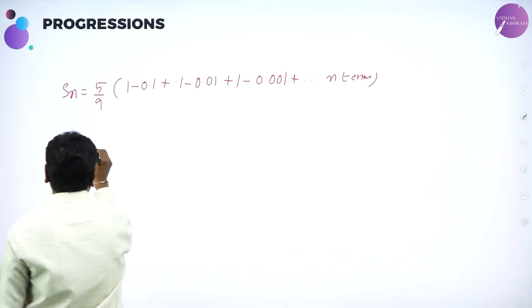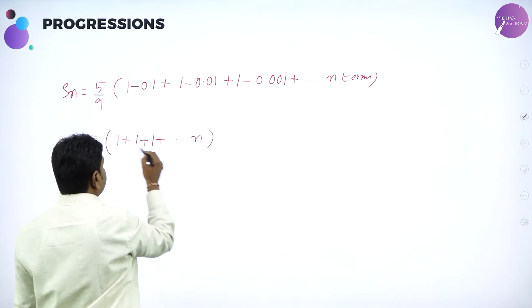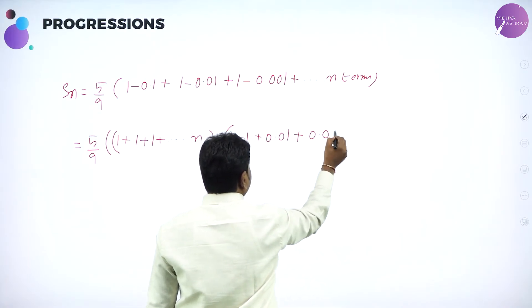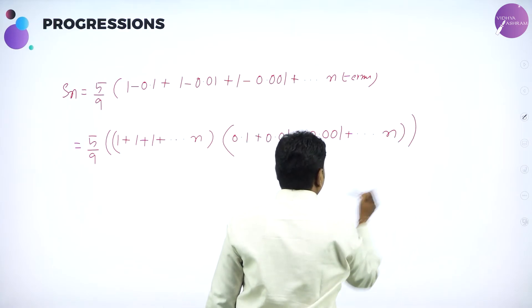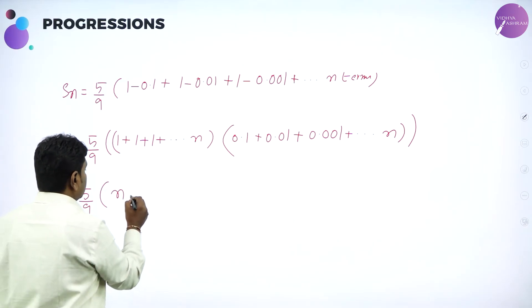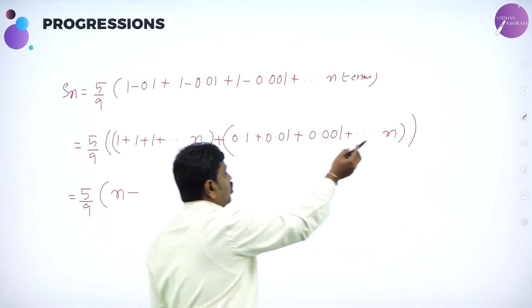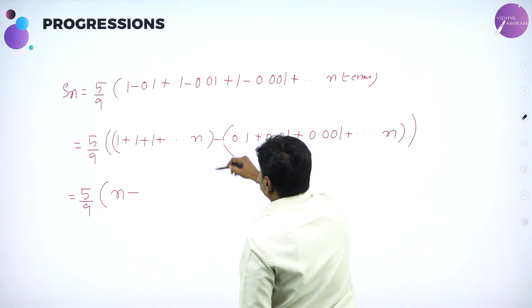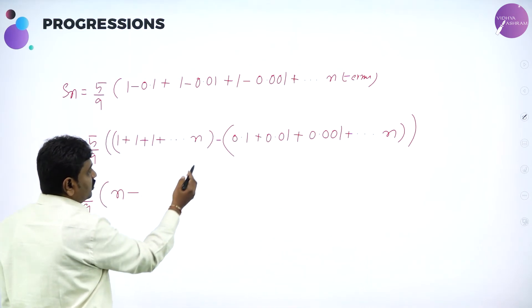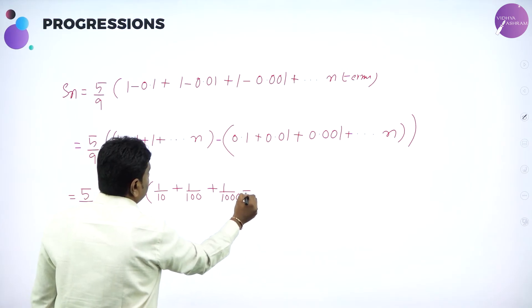Now group all the 1s: 1 + 1 + 1 + ... till n terms gives n. And we have 0.1, 0.01, 0.001 and so on till n terms — take minus common — so it becomes 1/10 + 1/100 + 1/1000 + ... till n terms. This is one group in GP.